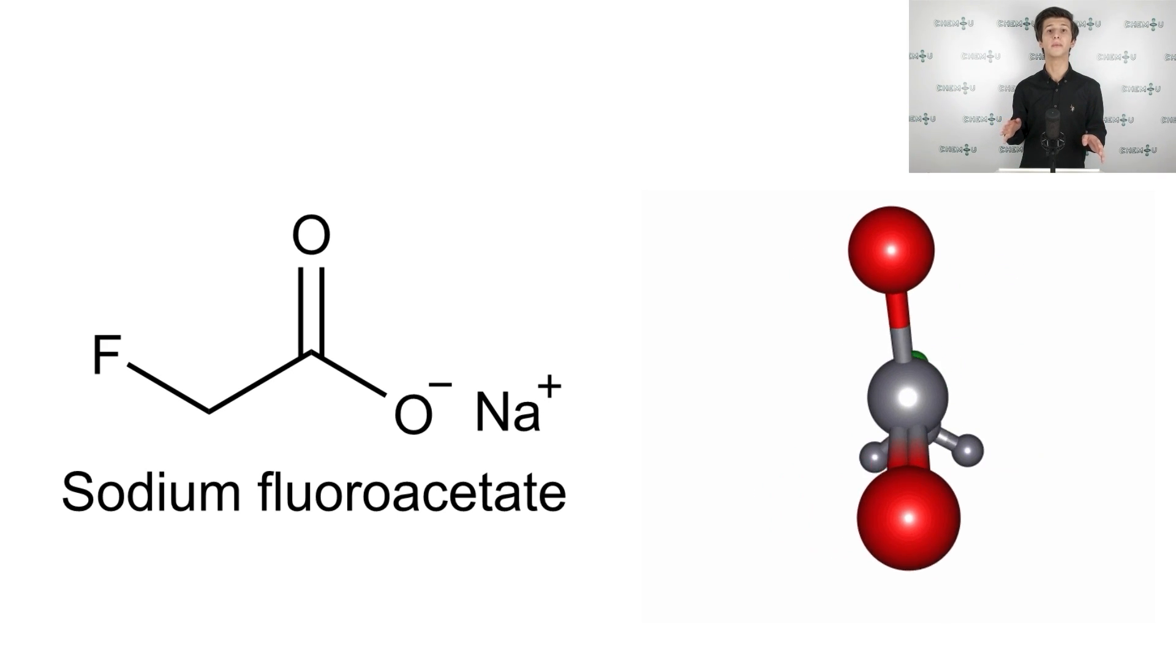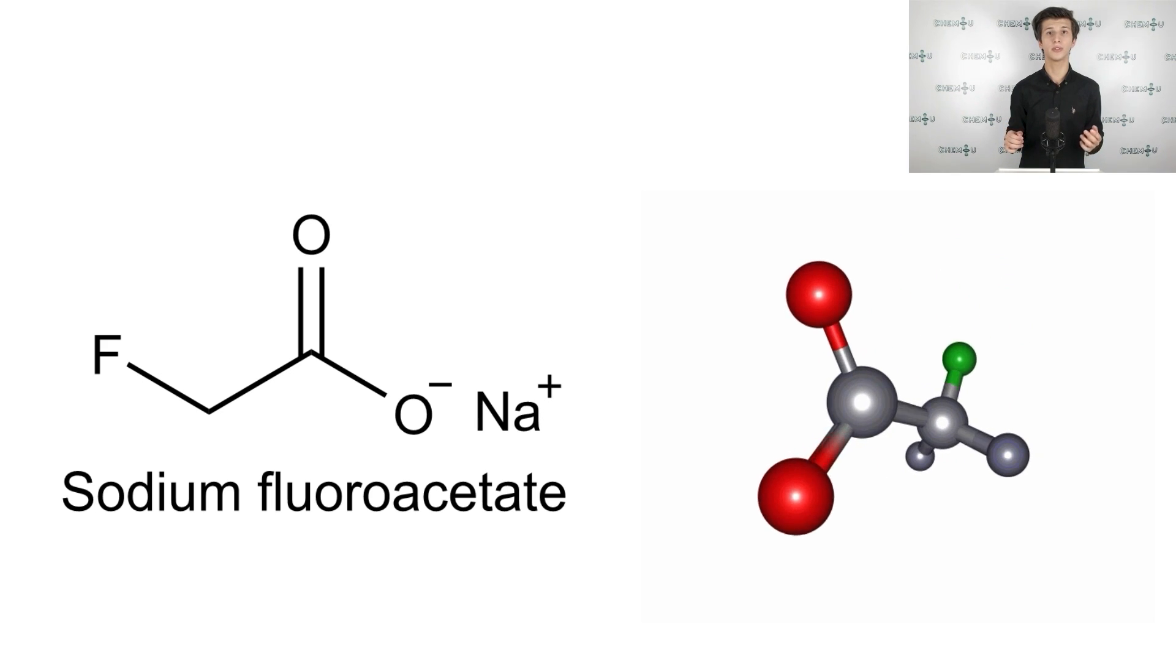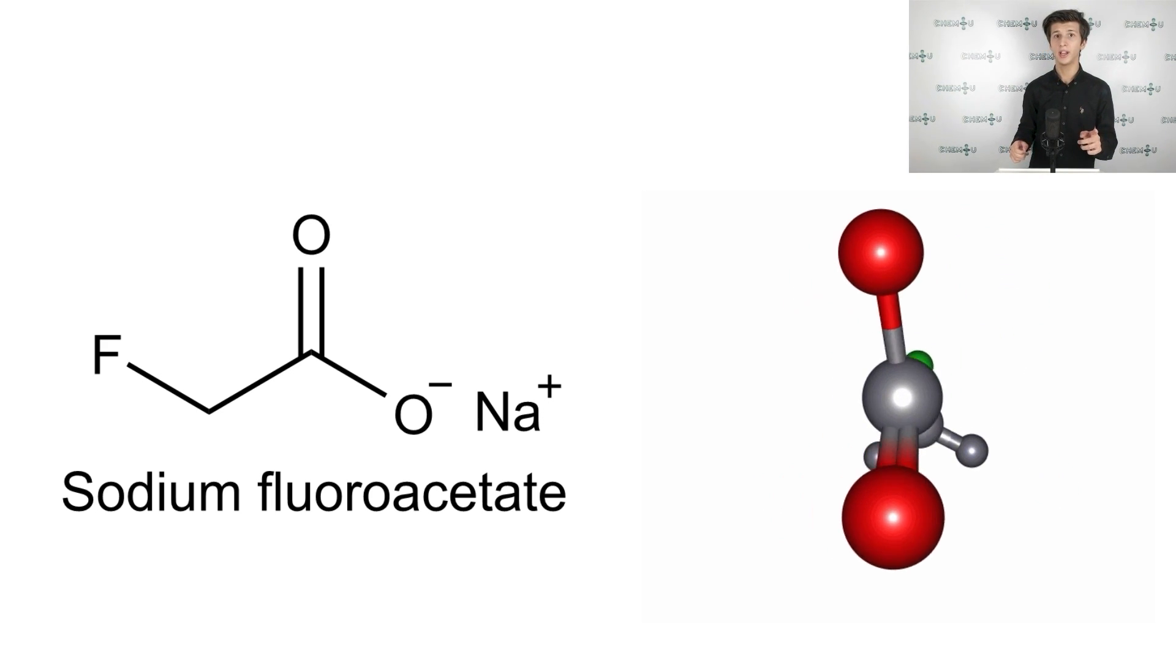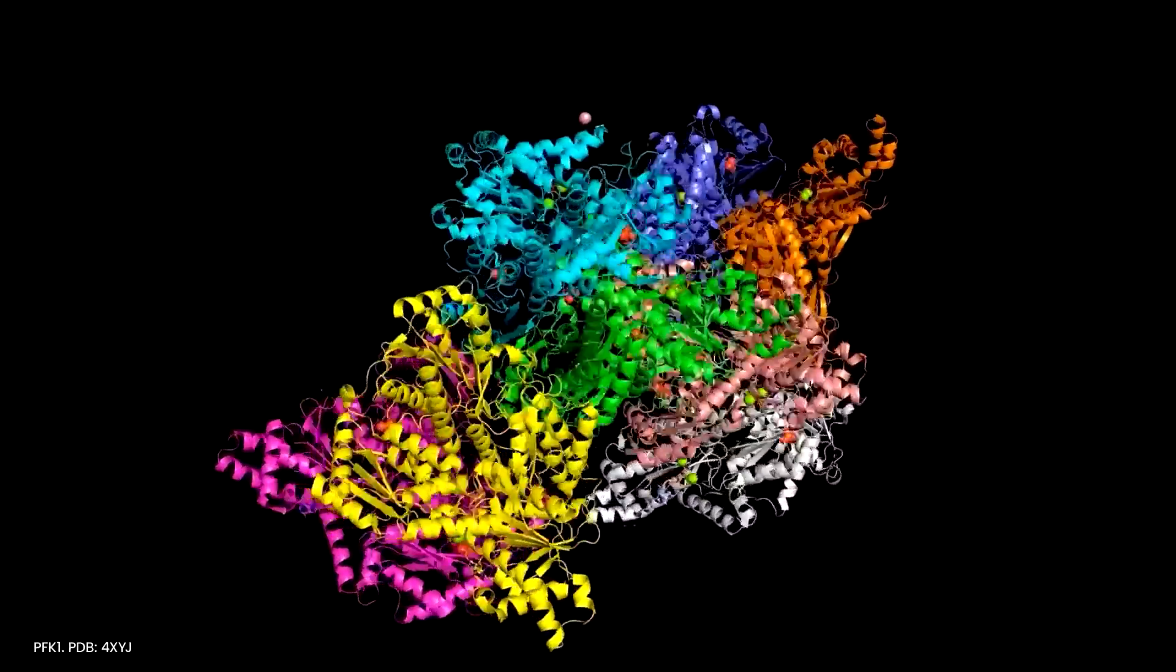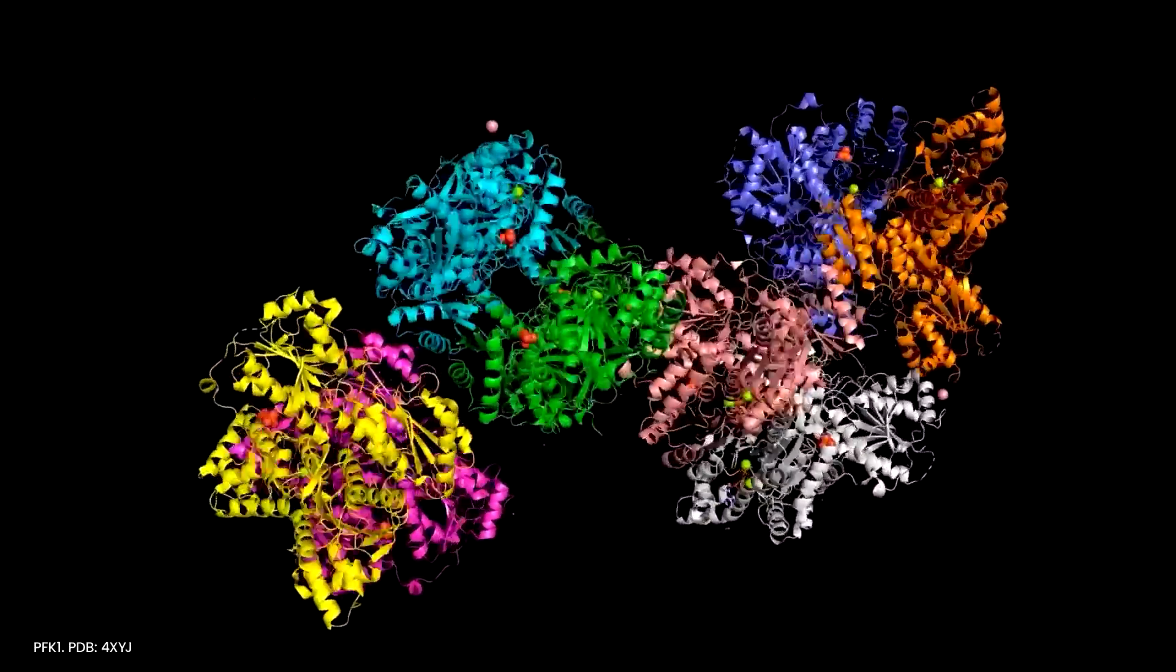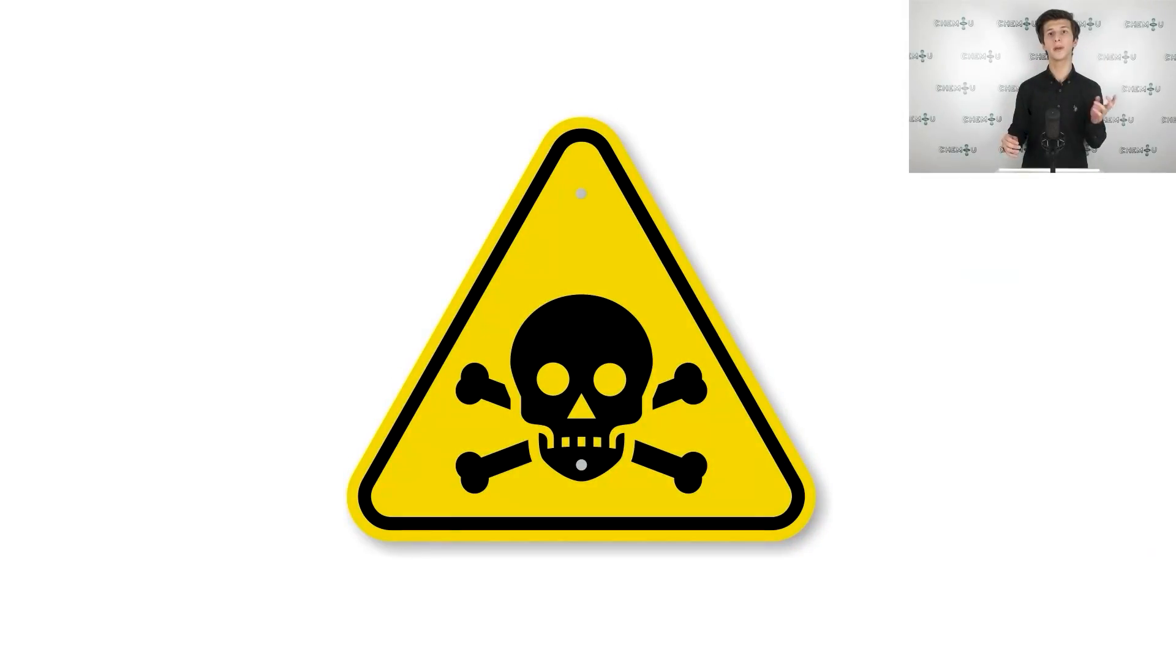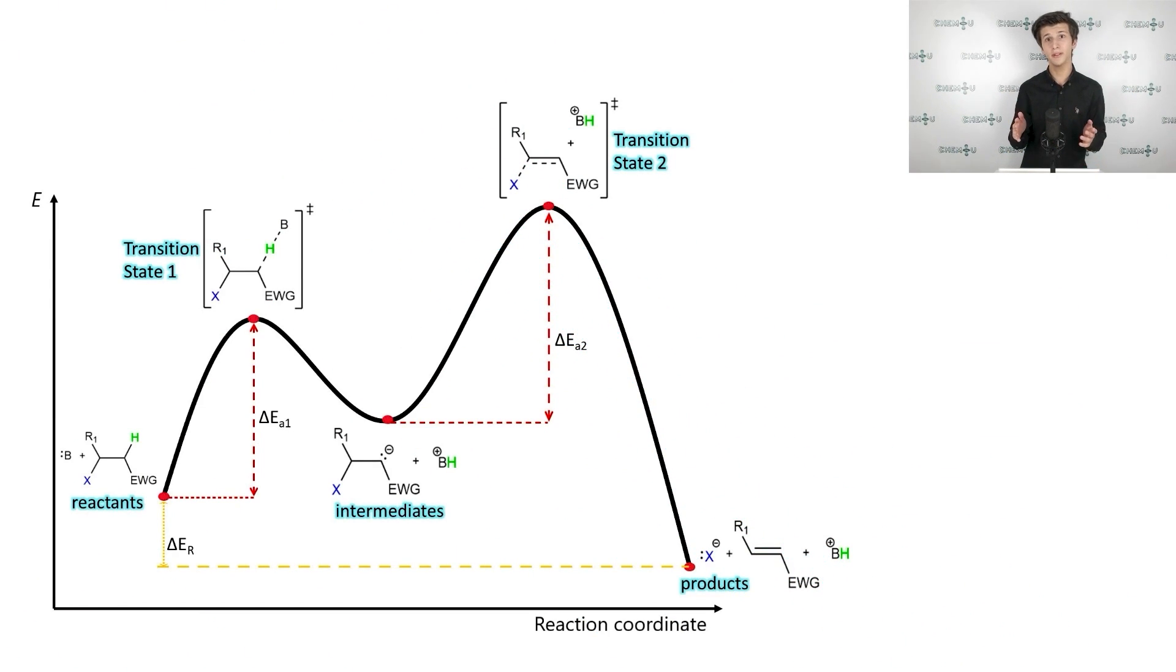Sodium fluoroacetate binds tightly to aconitase thus leading to the increase of citrate concentration in blood. Furthermore, it allosterically inhibits PFK1, the key enzyme of glycolysis. As a result, cells cannot metabolize carbohydrates and produce energy. Lastly, I would like to mention that it is also poisonous for humans. Now it is time to finish the break and return to the factors that favor the E1CB elimination mechanism. I hope that you are all right so far and ready for the last part for today. We are almost done.